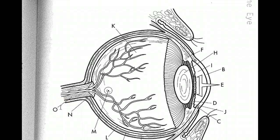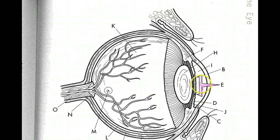Here is our diagram of the eye. I'm going to start with the pupil, which I'm going to draw in pink. The pupil is this front section of the eye. Remember that in real life it's black, and it's the circular area right here in front.